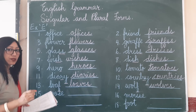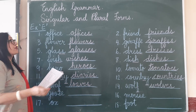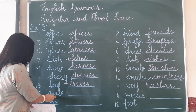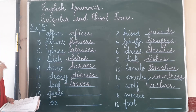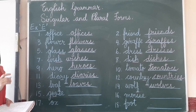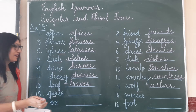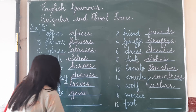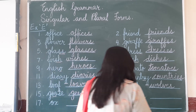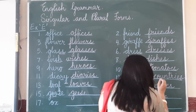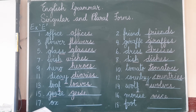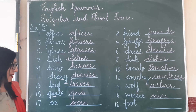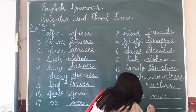Now some nouns do not follow the rules of changing from singular to plural forms. The vowels in the middle change sometimes. So 'goose' becomes 'geese' — G-E-E-S-E. One mouse, many mice — M-I-C-E. One ox, many oxen — O-X-E-N. And one foot, many feet.